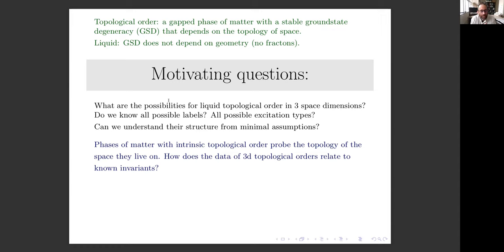Analogous to knowing the statistics of anyons in 2+1 dimensions—although we have some good examples of topological orders in 3+1 dimensions, it's much less clear that we understand the whole picture. So it's interesting to ask whether we can develop the right mathematical structure starting from these minimal assumptions.